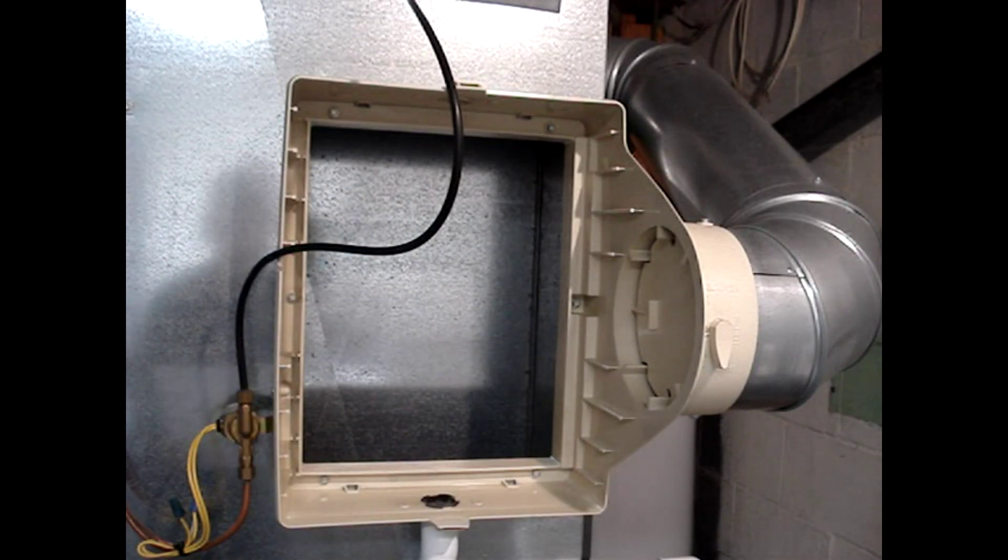A hole is cut in the ductwork and the humidifier case is mounted on top of the hole. The humidifier can be mounted on the supply or return side ductwork.